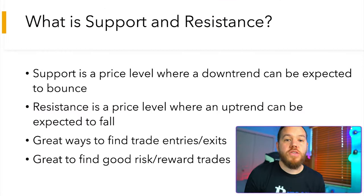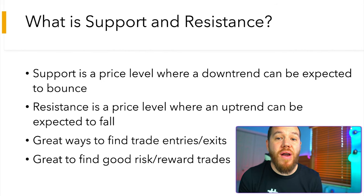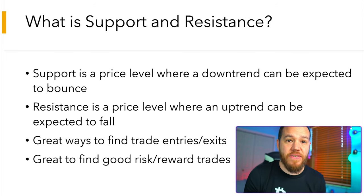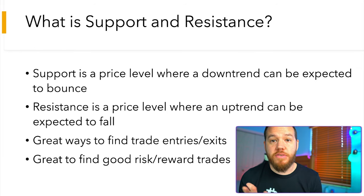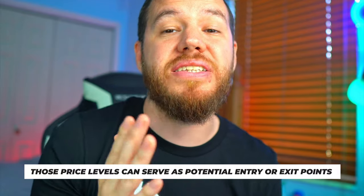Support and resistance can come in various forms and the concept is a bit more difficult to master than it may appear. Support is a price level where a downtrend can be expected to pause due to a concentration of demand or buying interest. As the price of an asset drops, demand increases, forming the support line. Resistance zones arise due to selling interest when prices have increased. Once an area or zone of support or resistance has been identified, those price levels can serve as potential entry or exit points.